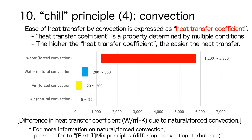The ease of heat transfer in a fluid is expressed by the heat transfer coefficient. Unlike thermal conductivity, the heat transfer coefficient varies with multiple conditions, meaning it can be controlled by shaking techniques and methods. The higher the heat transfer coefficient, the easier heat is transferred. A bar graph shows the heat transfer coefficients of water and air, confirming that there is a wide range of values even for the same substance.